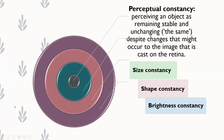When we talk about perceptual constancies, it's basically talking about three concepts that demonstrate how our brain knows that a particular concept is constant. There might be changes to the image cast onto the retina, but our brain knows that just because a person is moving further away, they're not actually getting smaller. The three types of constancies are size constancy, shape constancy, and brightness constancy.